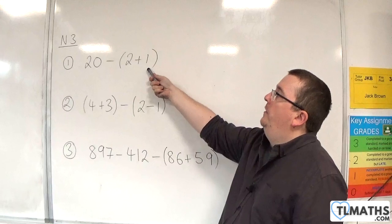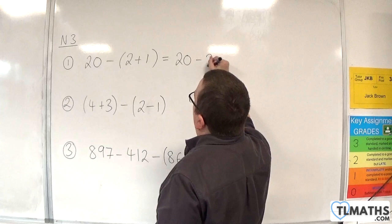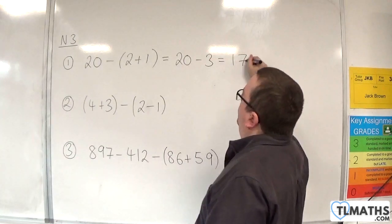2 plus 1 is 3. We've got to do that first. And we get 20 take away 3, and so that is 17.